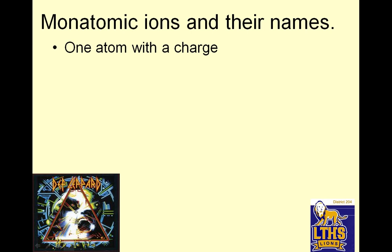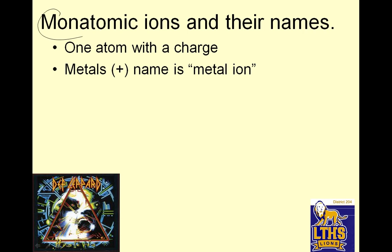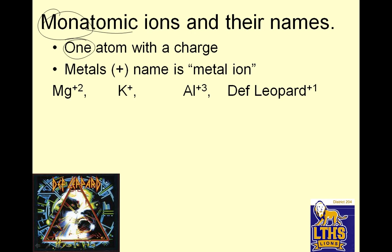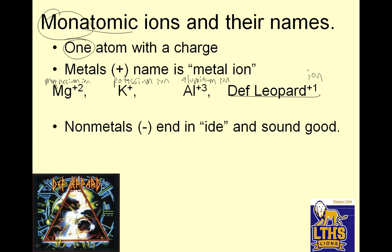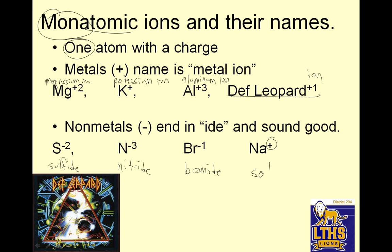Monatomic ions and their names — one atom with a charge. Positive metals: the name is just the metal ion. So this is the magnesium ion, this is the potassium ion, that is the aluminum ion. Non-metals are negative and end in "-ide": this is simply sulfide, nitride, bromide. And — oh, it's positive — I almost tricked you. Sodium ion.